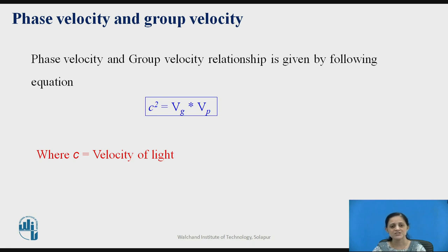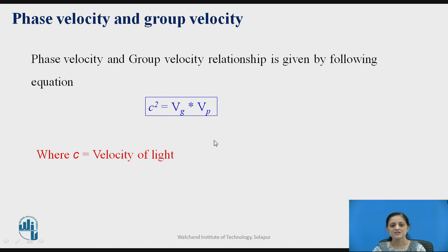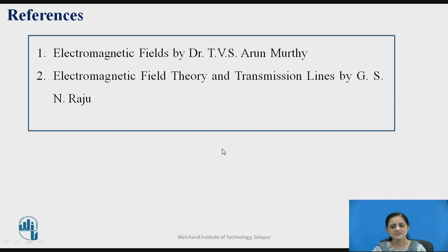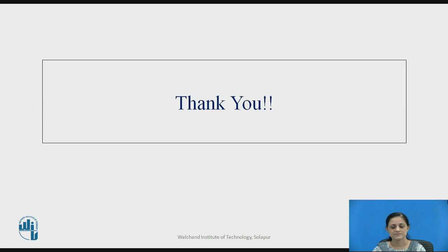There is an equation that gives the relation between Vp and Vg. The relationship between phase velocity and group velocity is given by: Vp times Vg equals C squared, where C is the velocity of light, Vg is the group velocity, and Vp is the phase velocity. This equation gives the relation between phase velocity and group velocity. These are the characteristics of the transmission line equations. These are the references used for today's session. Thank you.